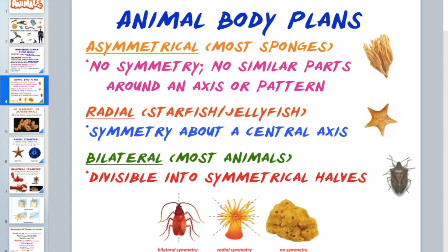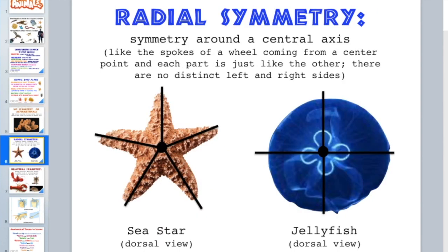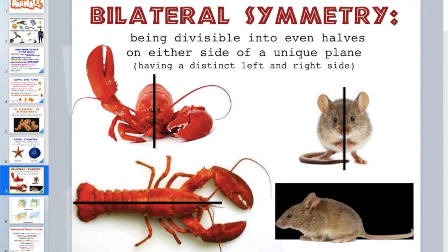Here's a picture of a sponge — you can see random growth with no central axis. For radial symmetry, we look from the top: each leg of a sea star is similar. Someone asked why you can't just divide the sea star in half for bilateral — the key is that if you spin it, there's no distinct left and right side. The jellyfish, viewed from the top, also shows these slices.